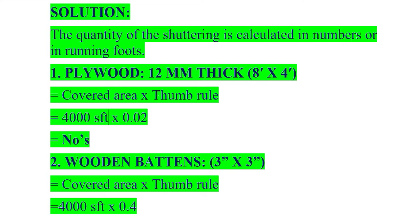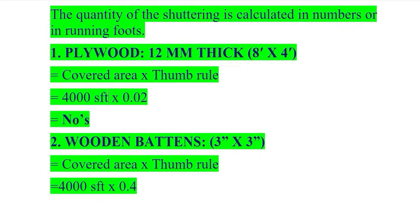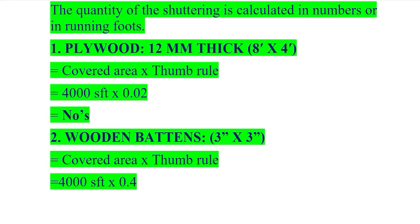The thumb rule means we choose a constant number for approximately calculating quantities. With the help of experience and daily practice, engineers working on site designed an approximately constant number to calculate the shuttering quantities, saving time.